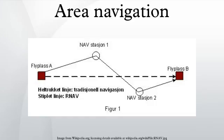Area navigation is a method of instrument flight rules navigation that allows an aircraft to choose any course within a network of navigation beacons, rather than navigate directly to and from the beacons. This can conserve flight distance, reduce congestion, and allow flights into airports without beacons.